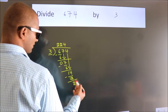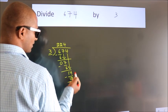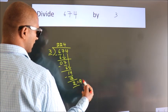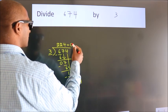After this, no more numbers to bring it down, so we stop here. This is our remainder. This is our quotient.